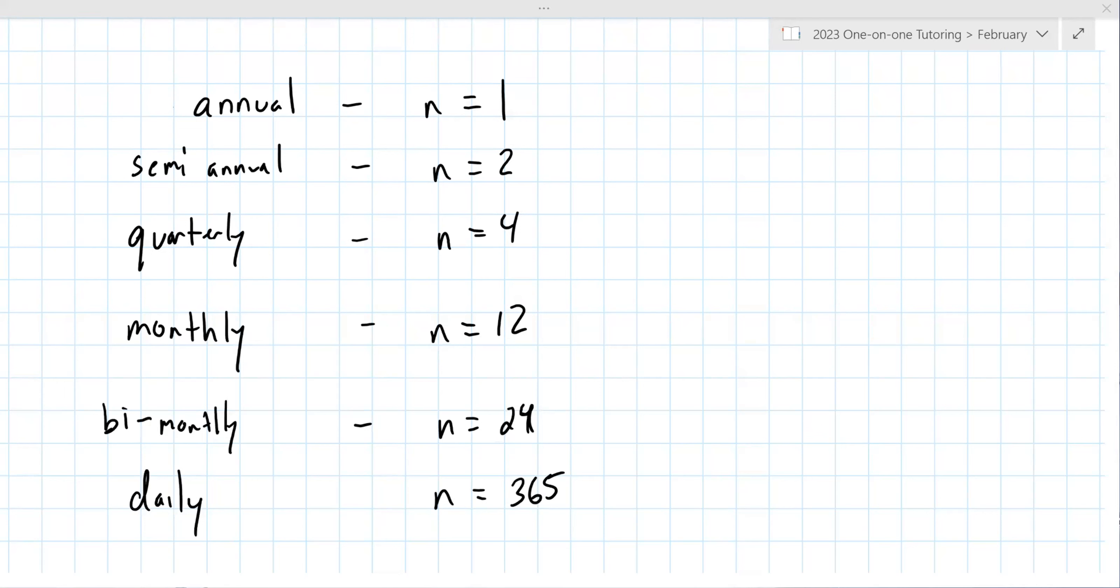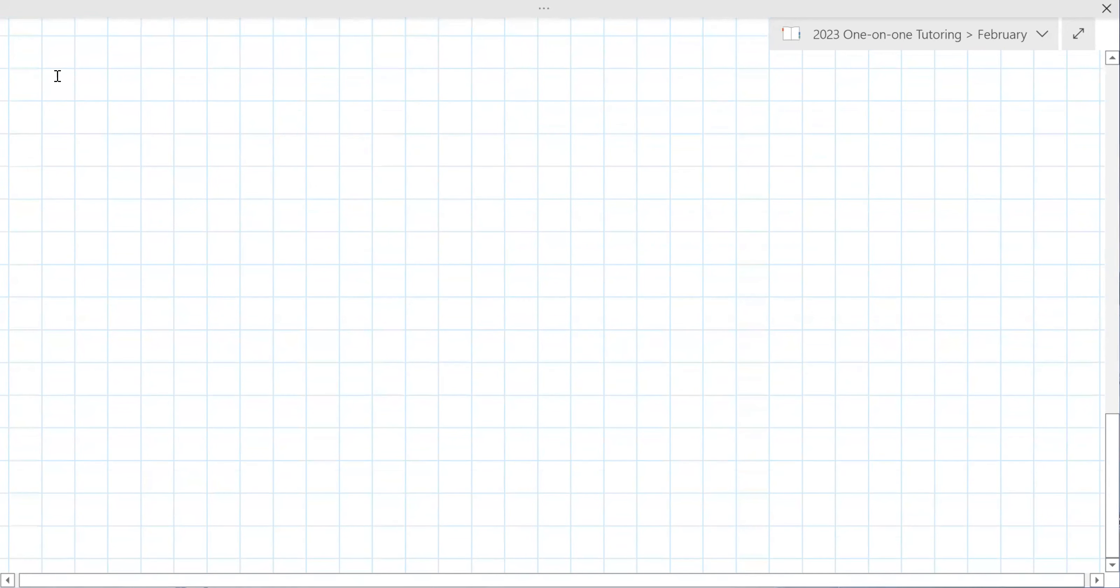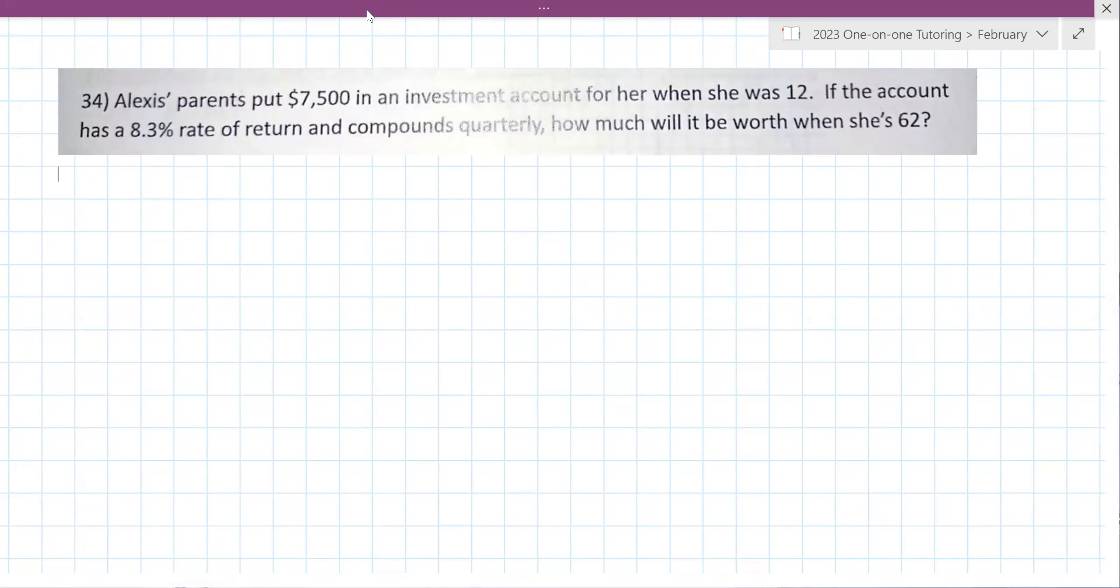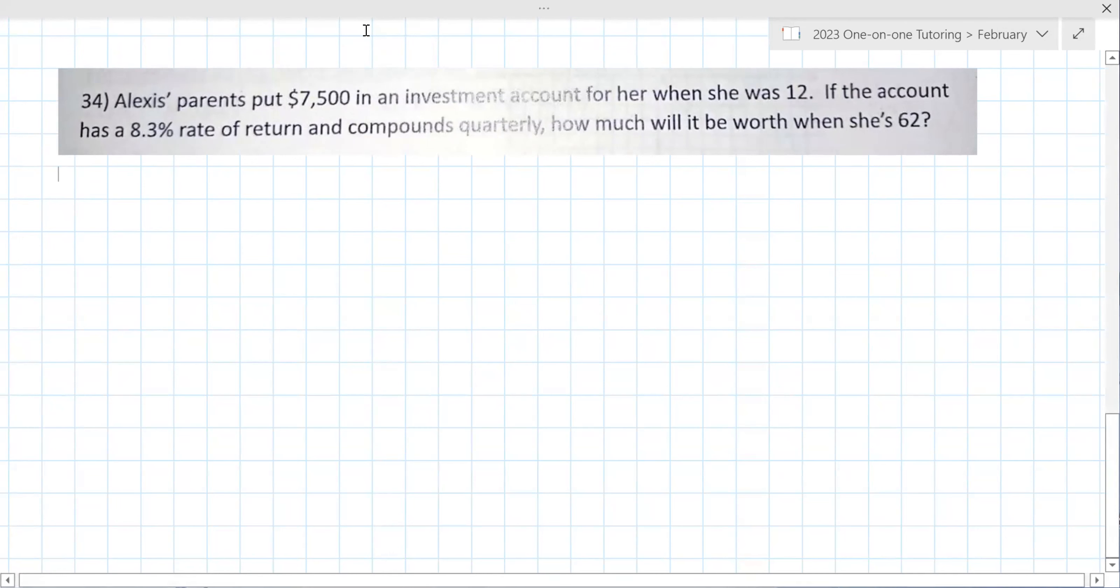When we look at the next problem, you really want to look for that keyword. Which one is it that stands out here? Question 34. Alexa's parents put $7,500 in an investment account for her when she was 12. If the account has an 8.3% rate of return and compounds quarterly, how much will it be worth when she's 62? Again, you got to write that formula. You do also have to identify these values.